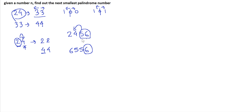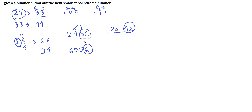The advantage of reversing the left part and replacing the right side with it is that the first half of the number continues to remain the same. So we end up with a number which is very close to the original number, and which is also a palindrome.